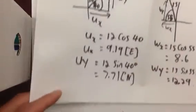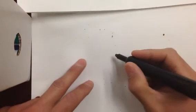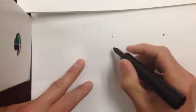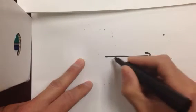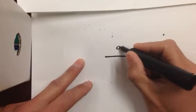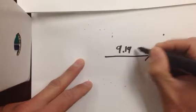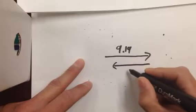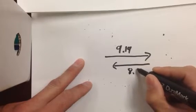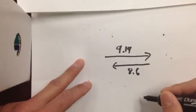Okay, so to summarize this information, we have vector u is, ux is 9.19 east. Plus 8.6 west.